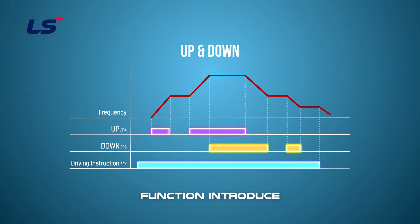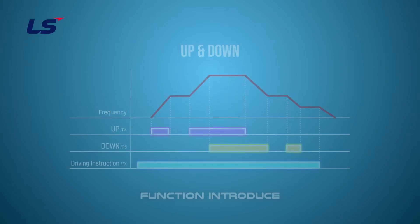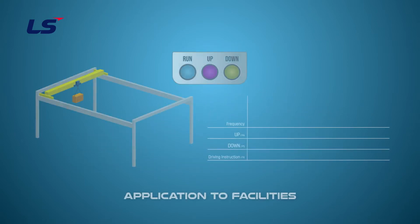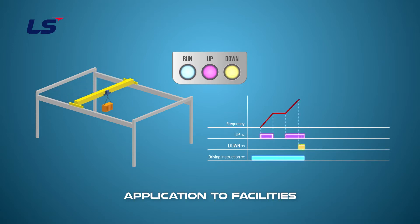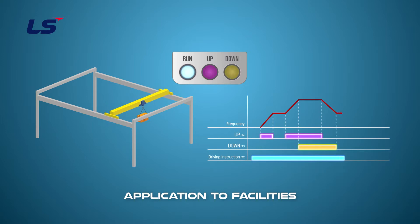If Up and Down inputs are on at the same time, the drive will run at a constant speed. The Up-Down operation can be applied to systems that operate by accelerating or decelerating with a switch, such as an overhead crane.